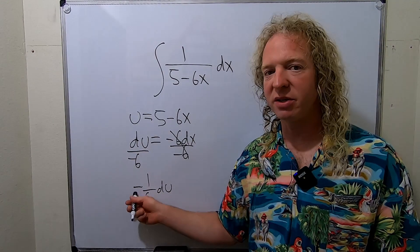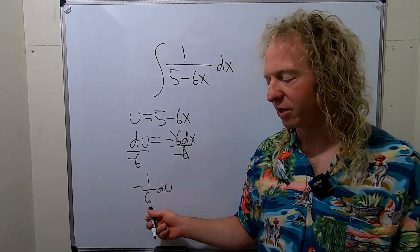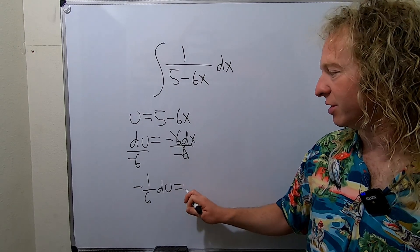And the reason you do that is because in the next step we're actually going to pull out the constant, so we have to have some foresight here. So this is dx.